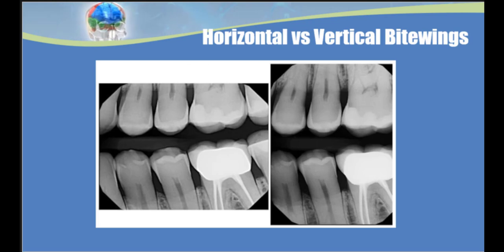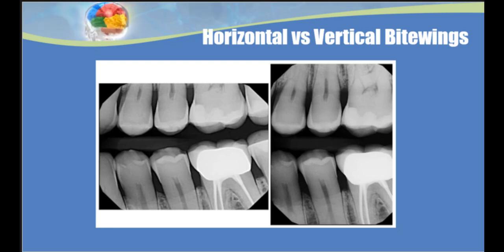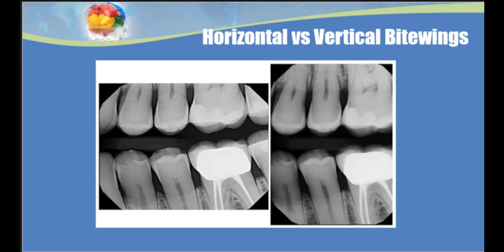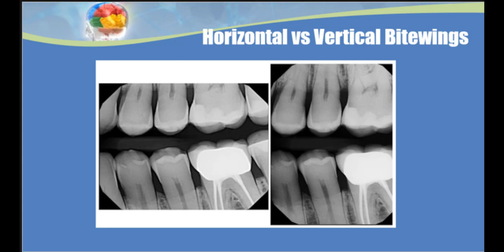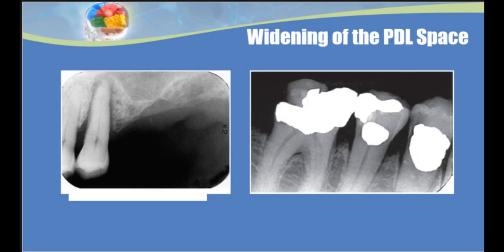When evaluating the height of the crestal bone, the best x-rays to use are bitewings. The angle of a periapical can distort the positioning of the crestal bone, and while panoramics can show bone loss, they are not the clearest image for evaluating intricate changes in the periodontium. We always use bitewings for evaluating posterior alveolar bone height. If the patient has more than five millimeters of bone loss, we may need to take vertical bitewing films. Vertical bitewings are more uncomfortable but are often necessary in patients with periodontal disease.